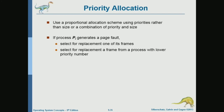Another important factor is priority allocation. It is not only the size that should be taken into account — the priority of the process also matters. When we studied CPU scheduling, we looked into process priority, and it makes sense to give more frames to higher-priority processes. What makes most sense is to divide frames among processes based on both the size of the process and the priority of the process, which makes the allocation even more reasonable.